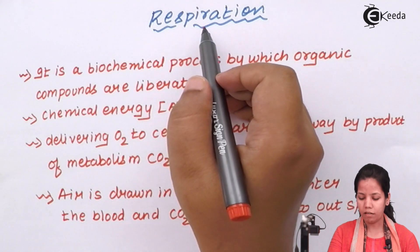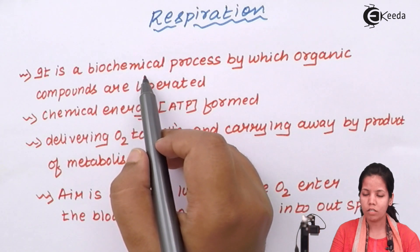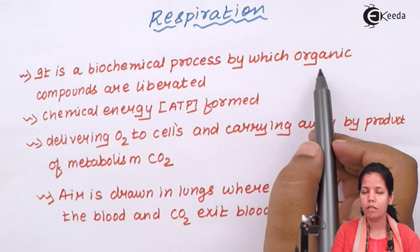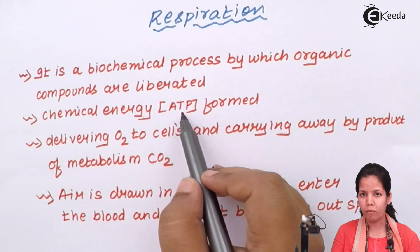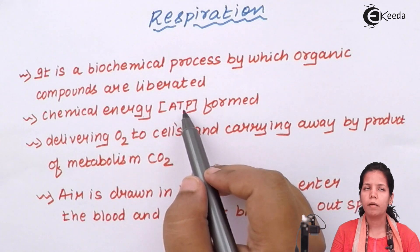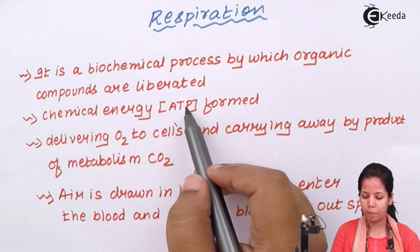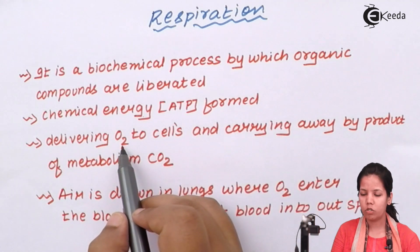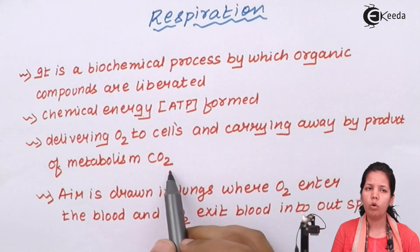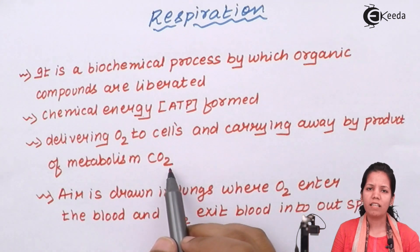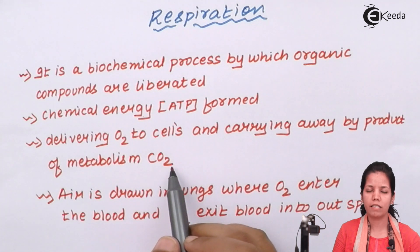Respiration can be termed as a biochemical process. It uses certain chemicals to produce certain compounds in our body, and these compounds are organic compounds which liberate or generate chemical energy in the form of ATP, or adenosine triphosphate. In simple language, cellular respiration is related to respiratory products. The delivery of oxygen to the cells and carrying away the byproduct of metabolism, which is carbon dioxide, is simple respiration — that is, inhalation plus exhalation, or inspiration plus expiration.